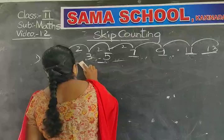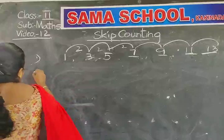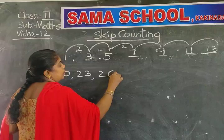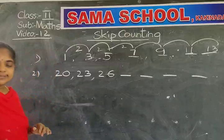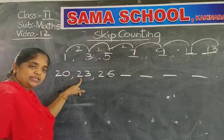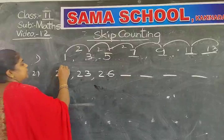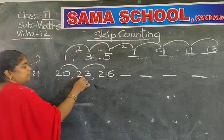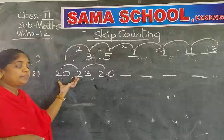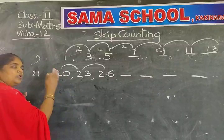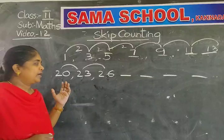One more example. 20, 23, and 26. See, children. First number is 20, next number is 23, after is 26. We have to complete the remaining four blanks. First we have to count how many numbers we left between these two numbers. How many numbers we skipped between 20 and 23, and between 23 and 26 also — we have to find.